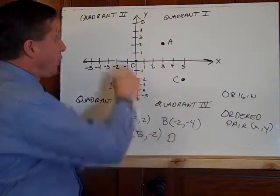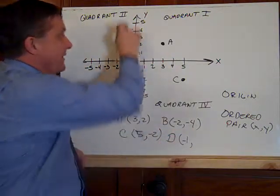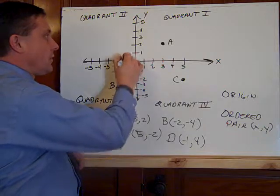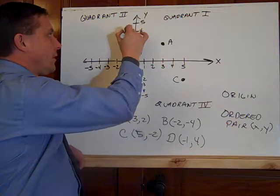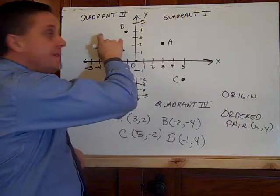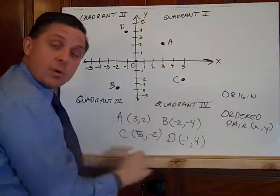And finally, we'll put one in quadrant two. Let's go negative one. Now we need a positive y. Let's say four. Negative one, four. These are points inside the quadrants. A is in quadrant one. D is in quadrant two. B is in quadrant three. And C is in quadrant four.